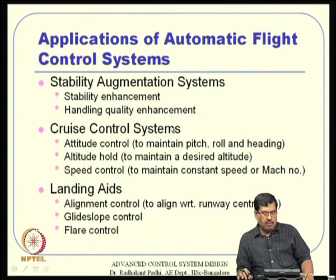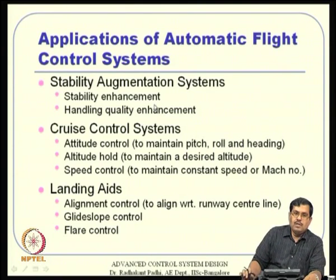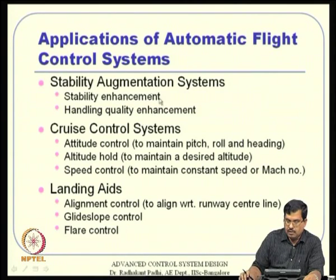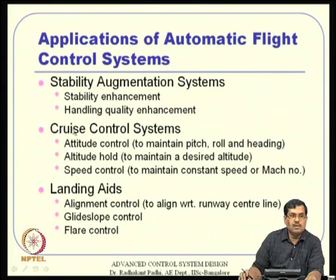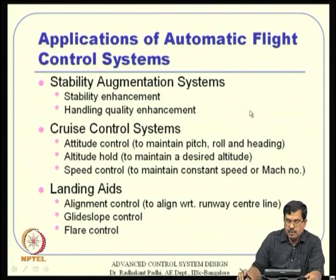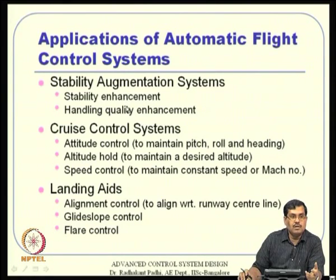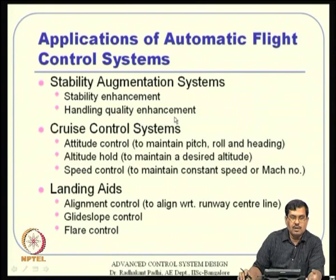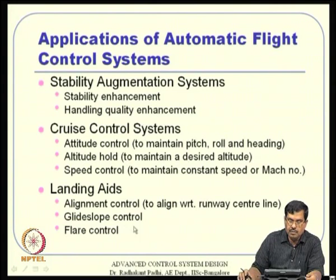In summary, the aircraft should respond in a way the pilot is comfortable with — that is handling quality. Mathematically, the eigenvalues of the closed-loop matrix should satisfy desired locations, leading to the desired response characteristics like percentage overshoot and settling time. Stability enhancement focuses on making the system stable, while handling quality goes further by specifying exact desired responses.